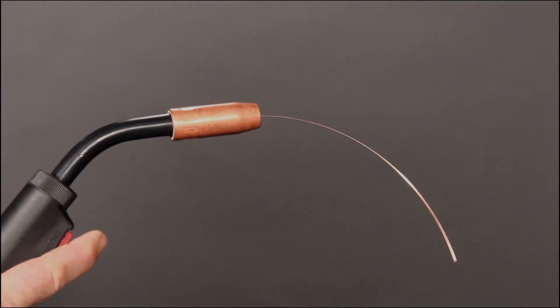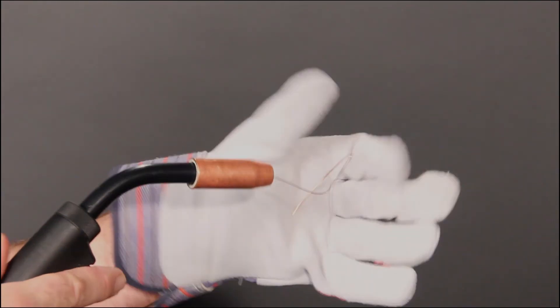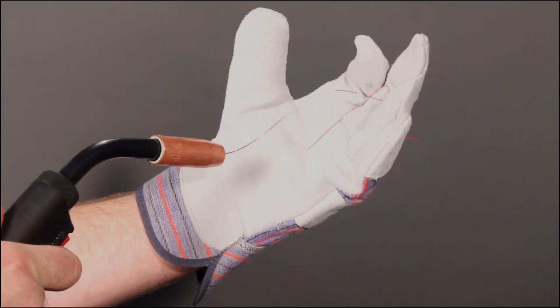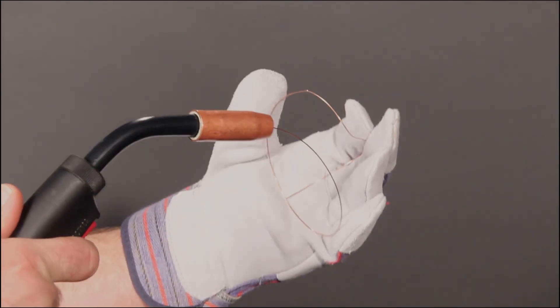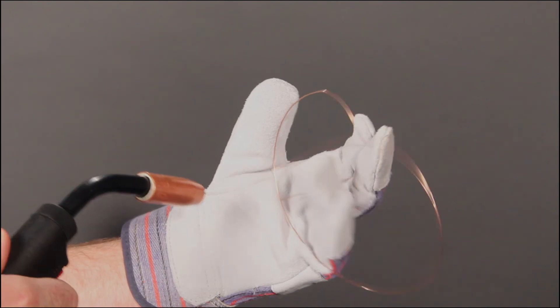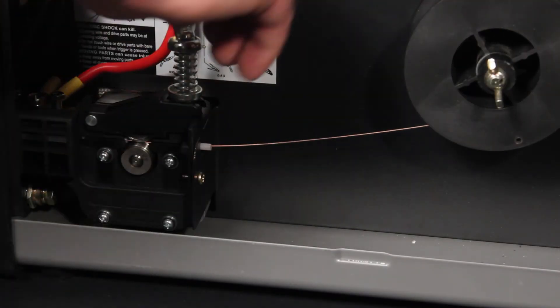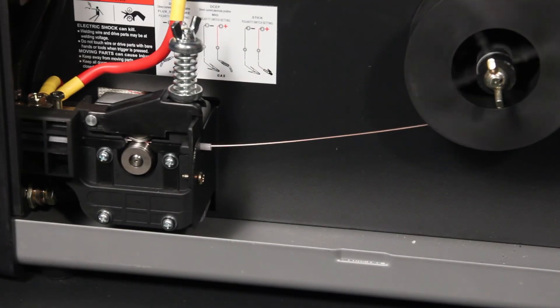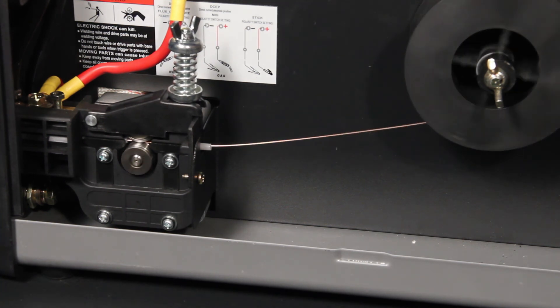Feed three to four inches of wire out of the end of the gun. Using a gloved hand, bend the wire and feed it into the gloved hand to apply some back pressure. While doing this, watch the wire for a smooth feed. If the wire slips, add another one half turn to the tension control adjustment.